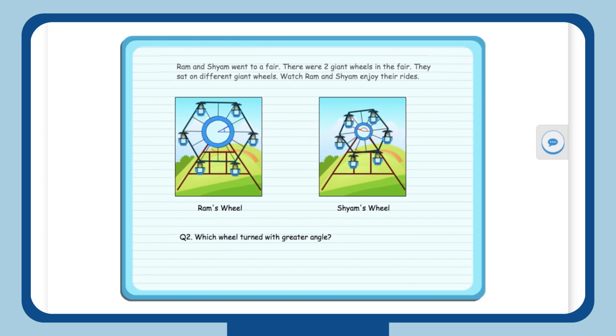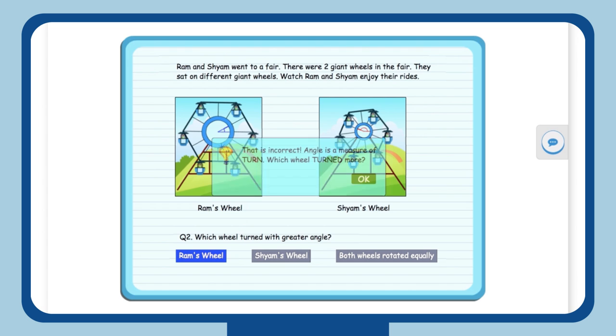MindSpark takes her back to the misconception questions. Her answer is incorrect. With this question, MindSpark has decided not to move forward. To remove this misconception, it defines angles to her and repeats the question.